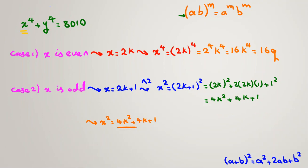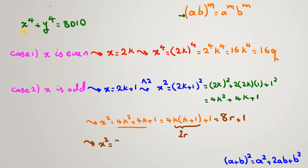Factoring from 4k, we get 4k(k + 1) + 1. Now k(k+1) is the product of two consecutive numbers — one even, one odd — so their product is even. We write k(k+1) = 2r, so x squared equals 4·(2r) + 1, which is 8r + 1. So x squared equals 8r + 1.